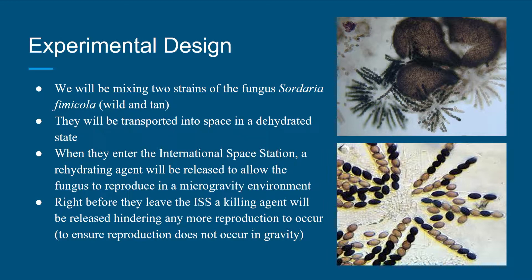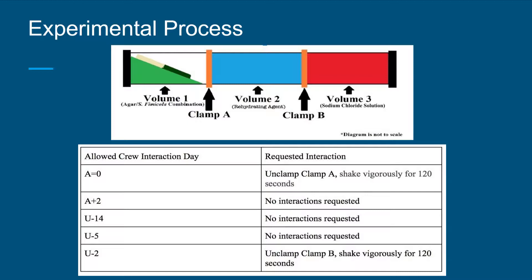Adarsh will be talking about the experimental process. On the diagram on the top, we have an illustration showing how we loaded the three volumes into our type 3 FME mini lab. In our second diagram, we have a table listing all of our allowed crew interaction days. In volume 1, we have a slanted piece of solid agar, which allows for increased contact area between the Sordaria and the agar, providing nutrients once rehydrated. In volume 2, we have our rehydrating solution, which will be unclamped on the first allowed day of crew interaction, and the astronauts will shake the experiment to ensure the two strands of Sordaria are mixed properly. In volume 3, we have our sodium chloride solution, which acts as our killing agent and will be released two days before the experiment leaves the ISS.